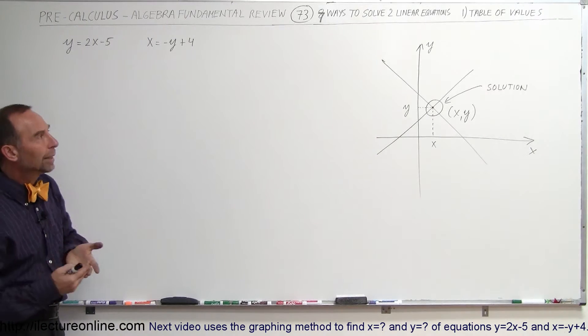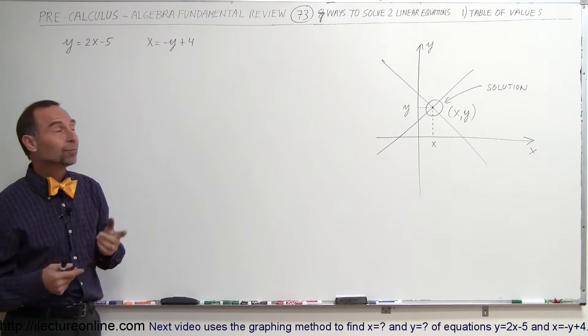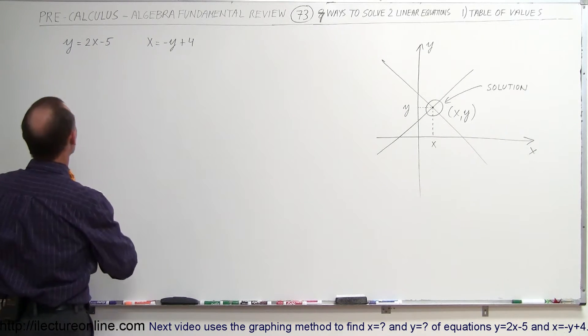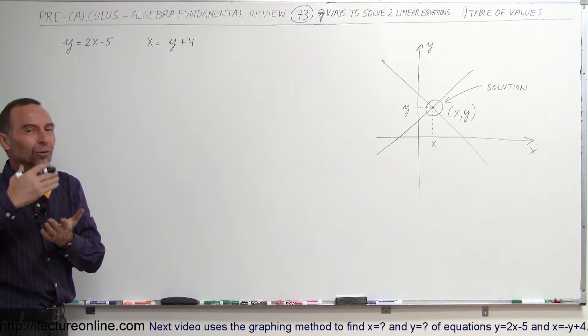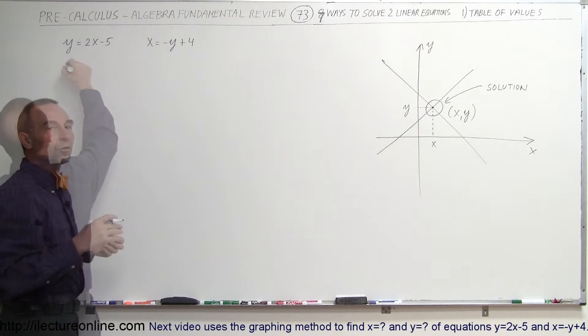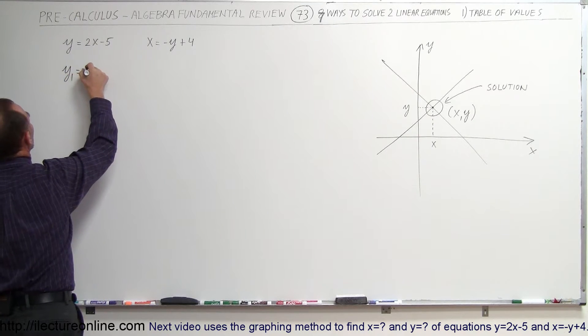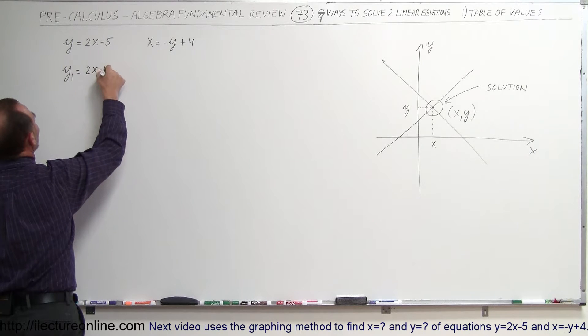we can use what we call a table of values. So what we're going to do is we can write this equation in terms of x equals everything else on the other side, or in this case, y equals with everything else on the other side. So this becomes our y equation, our first equation, so y1 is equal to 2x minus 5,